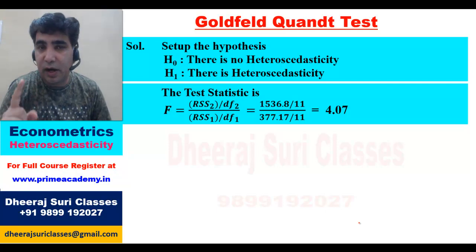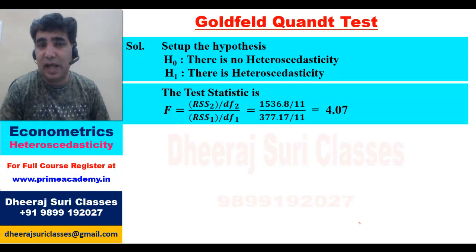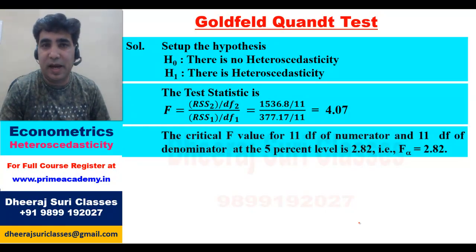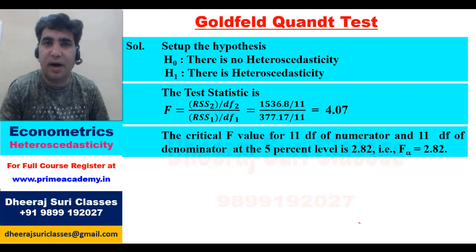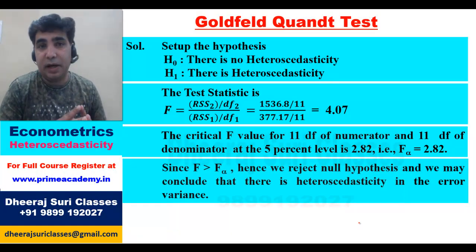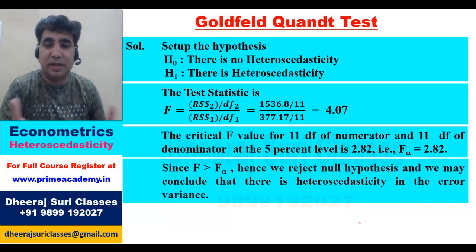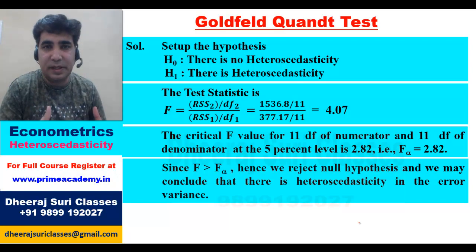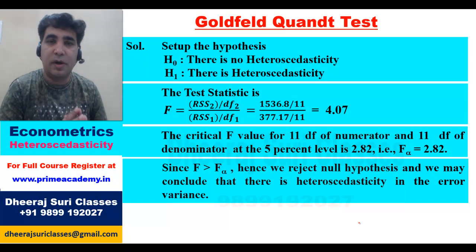To find the critical value of F, we need DF of numerator = 11 and DF of denominator = 11. Assuming α = 5%, F_alpha = 2.82. Since F = 4.07 > F_alpha = 2.82, we reject the null hypothesis and conclude that there is heteroscedasticity in the error variance. The model is suffering from the problem of heteroscedasticity.